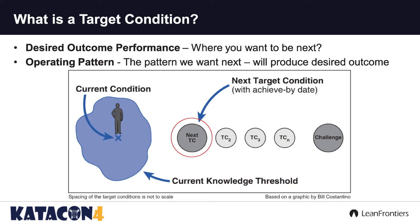What is a target condition? A target condition describes the desired future. It's a set of circumstances that go beyond your current knowledge threshold — meaning you don't know how to get there — but it is a manageable stretch that you can, in fact, achieve. Through that stretch, you will build your creative capabilities, which is ultimately your ability to improve and to innovate. You only have to describe and define one target condition at a time; you don't have to lay out a whole series of target conditions like a road map in advance.